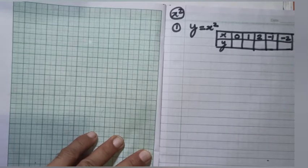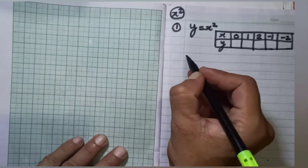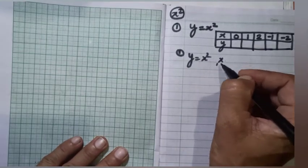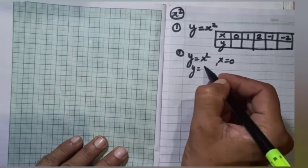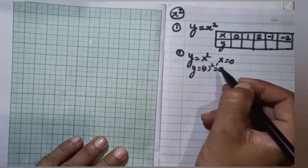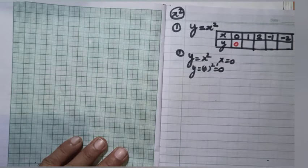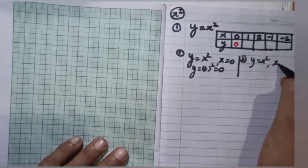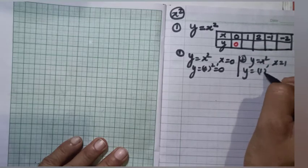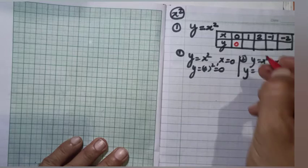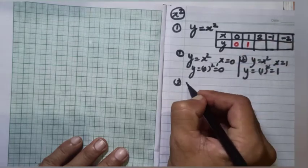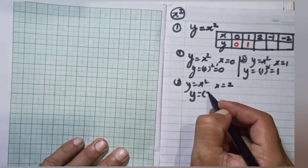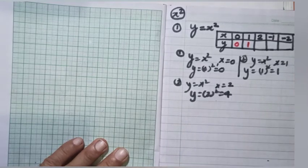We have y is equal to x squared. For x equal to 0, y equals 0 squared, which is 0. For x equal to 1, y equals 1 squared, which is 1. For x equal to 2, we substitute 2: y equals 2 squared, which is 4.